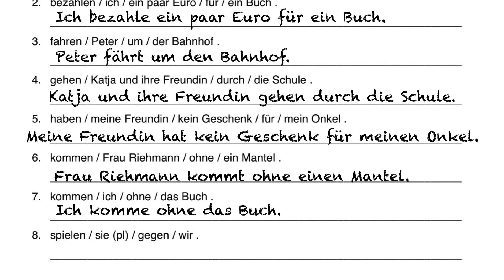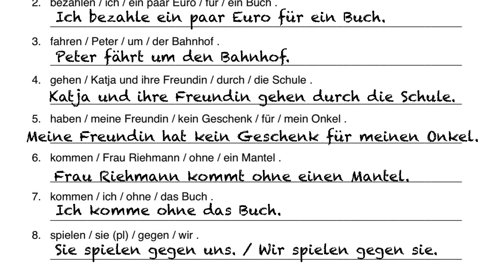Nummer acht: the subject can be either sie or wir. Depending on which one you choose, you may have to change your pronoun. If you use sie as the subject, you need gegen uns. If you use wir as the subject, you need gegen sie. So the sentences could be: sie spielen gegen uns, or wir spielen gegen sie.